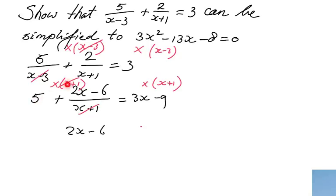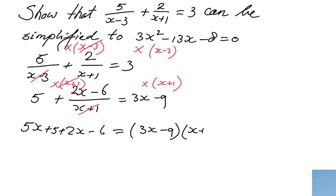Realize we also have to do 5 times x plus 1. 5 times x is 5x, and 5 times 1 is 5. So we get 5x plus 5 on the left side. On the right side, I'm going to write down those two sets of brackets, which is 3x minus 9 times x plus 1 — because we are going to use the FOIL method to expand those brackets.